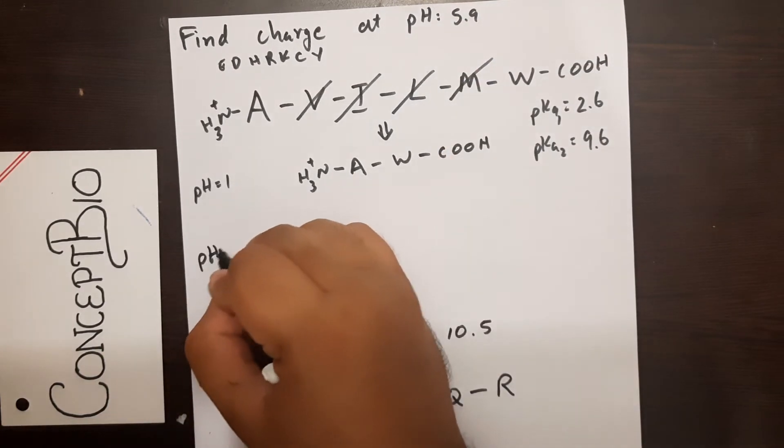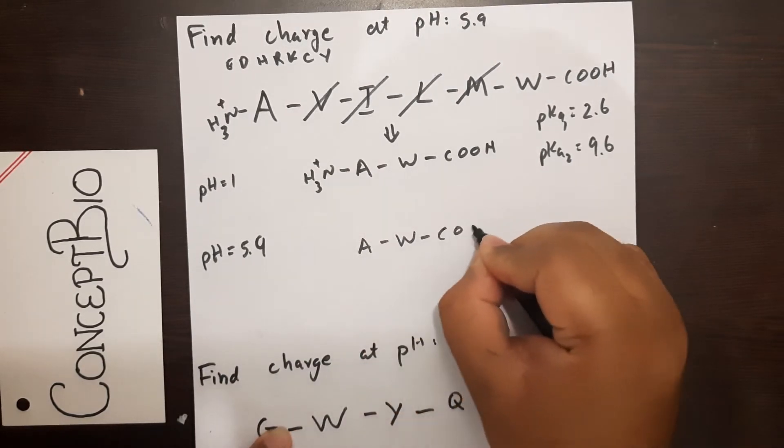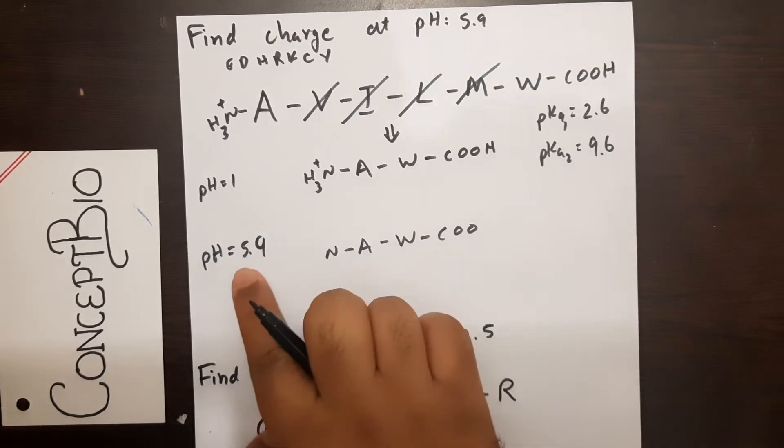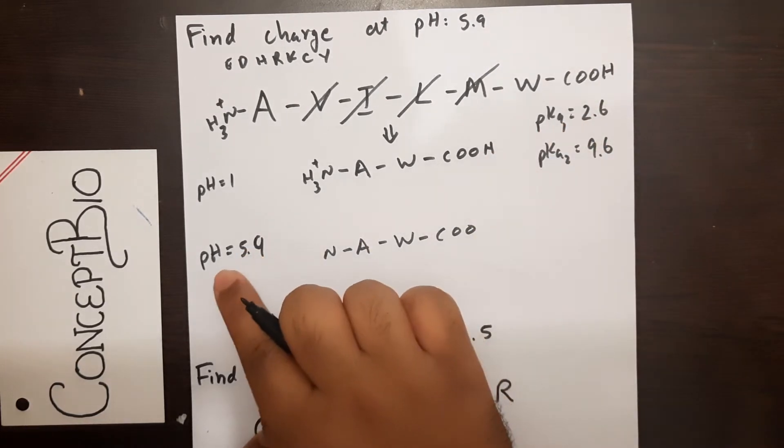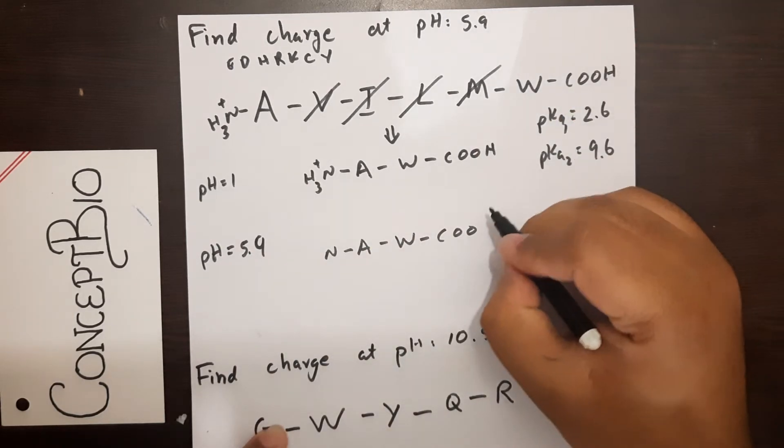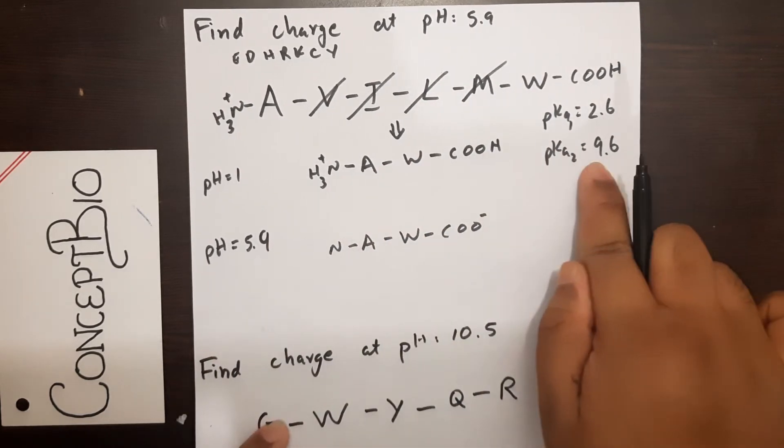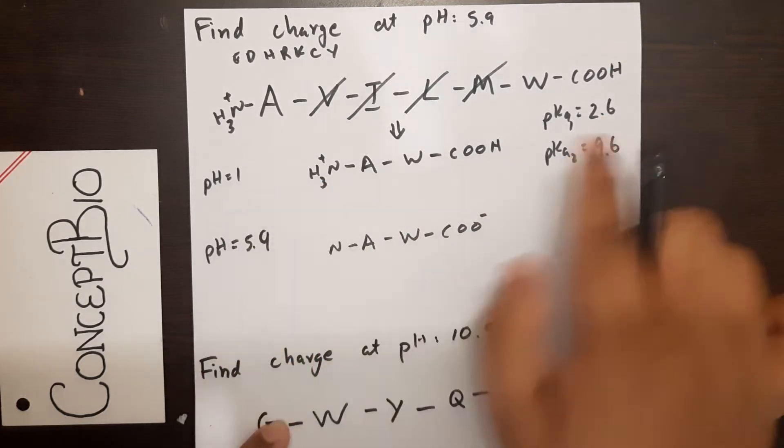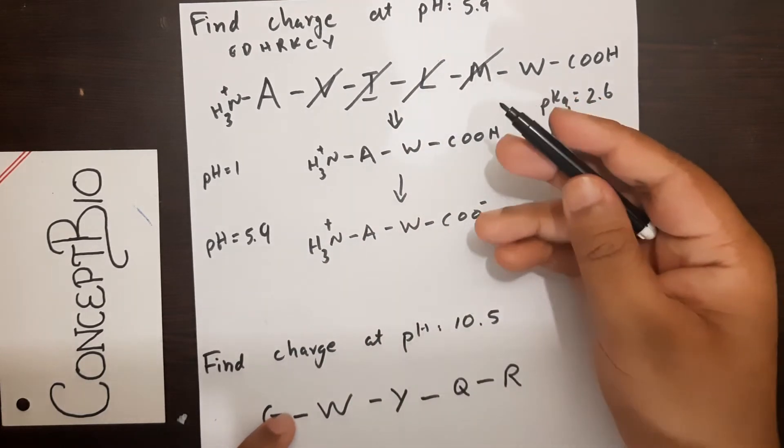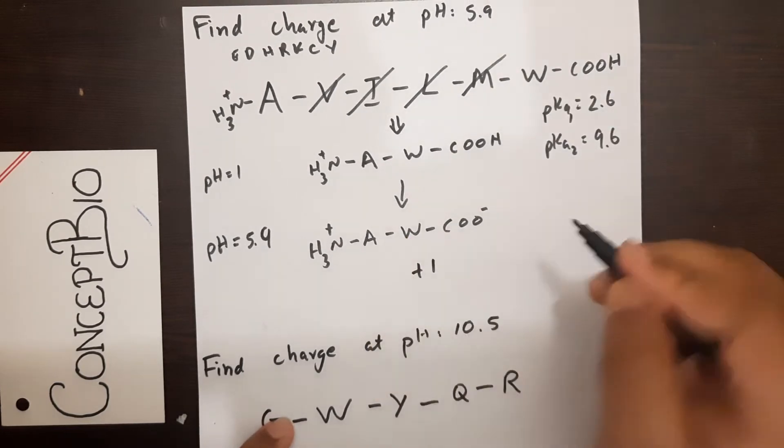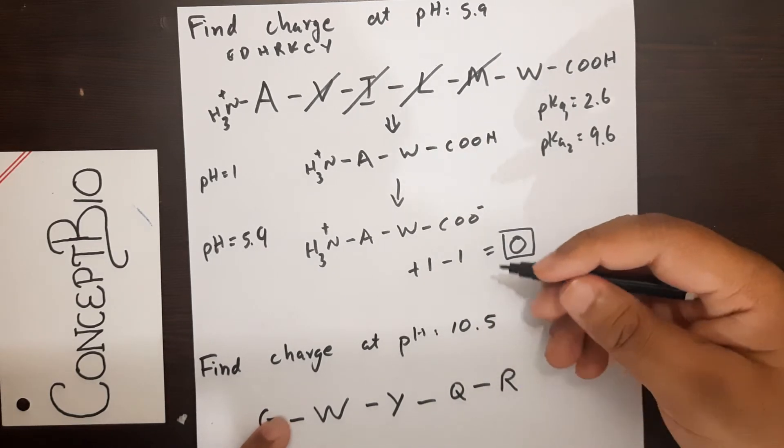At pH 5.9, draw COO - NH. Now is 5.9 greater than 2.6? Yes, therefore the alpha carboxyl group gets deprotonated because pH is greater than pKa, leading to COO minus. Look at the alpha amino group: is pH 5.9 greater or less than pKa2? It is less, therefore protonation of the alpha amino group, so this remains NH3 plus. What is the net charge? It is plus 1 from your alpha amino group and minus 1 from your carboxyl group, so it equals 0, and we have our zwitterion state.